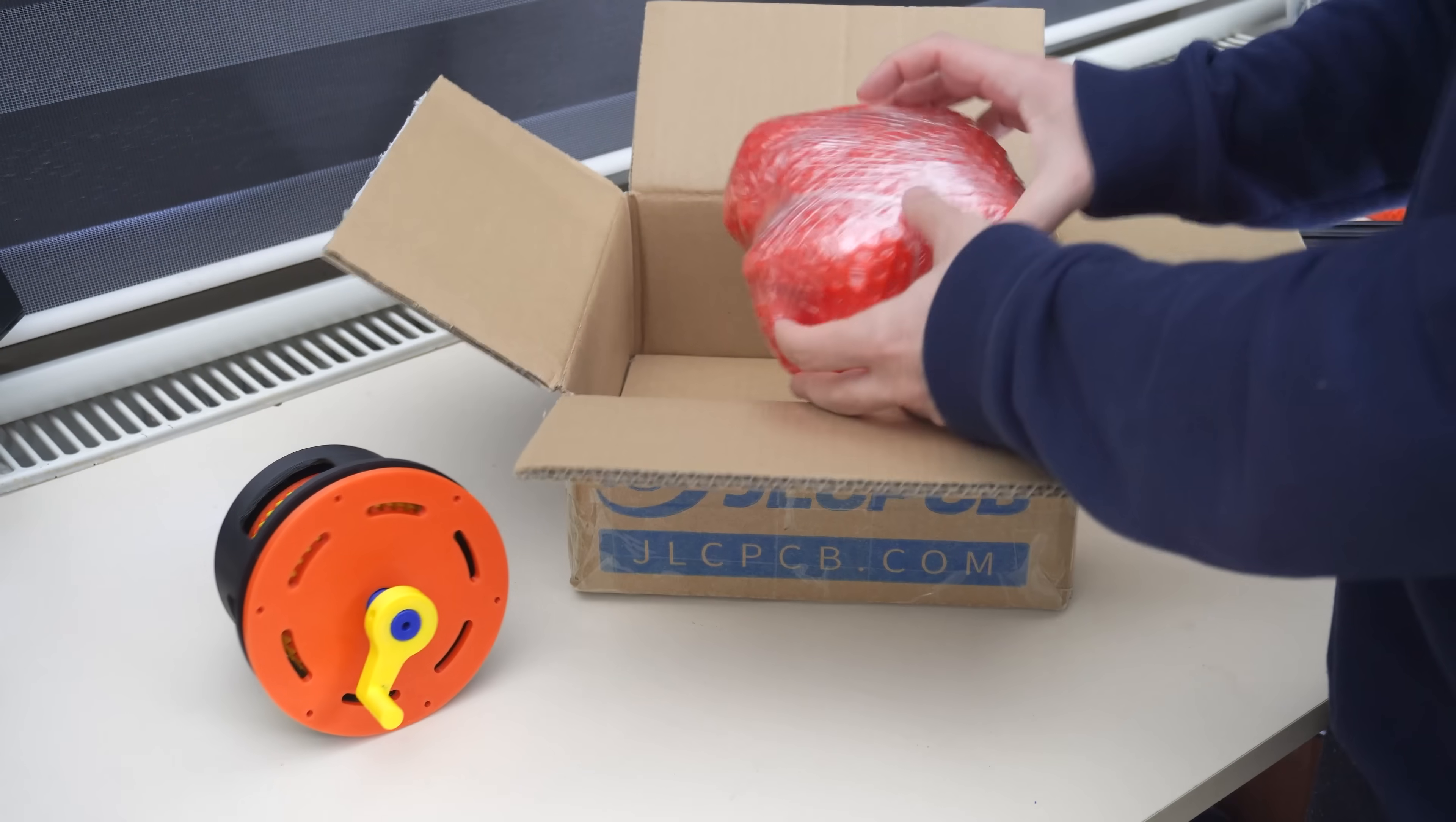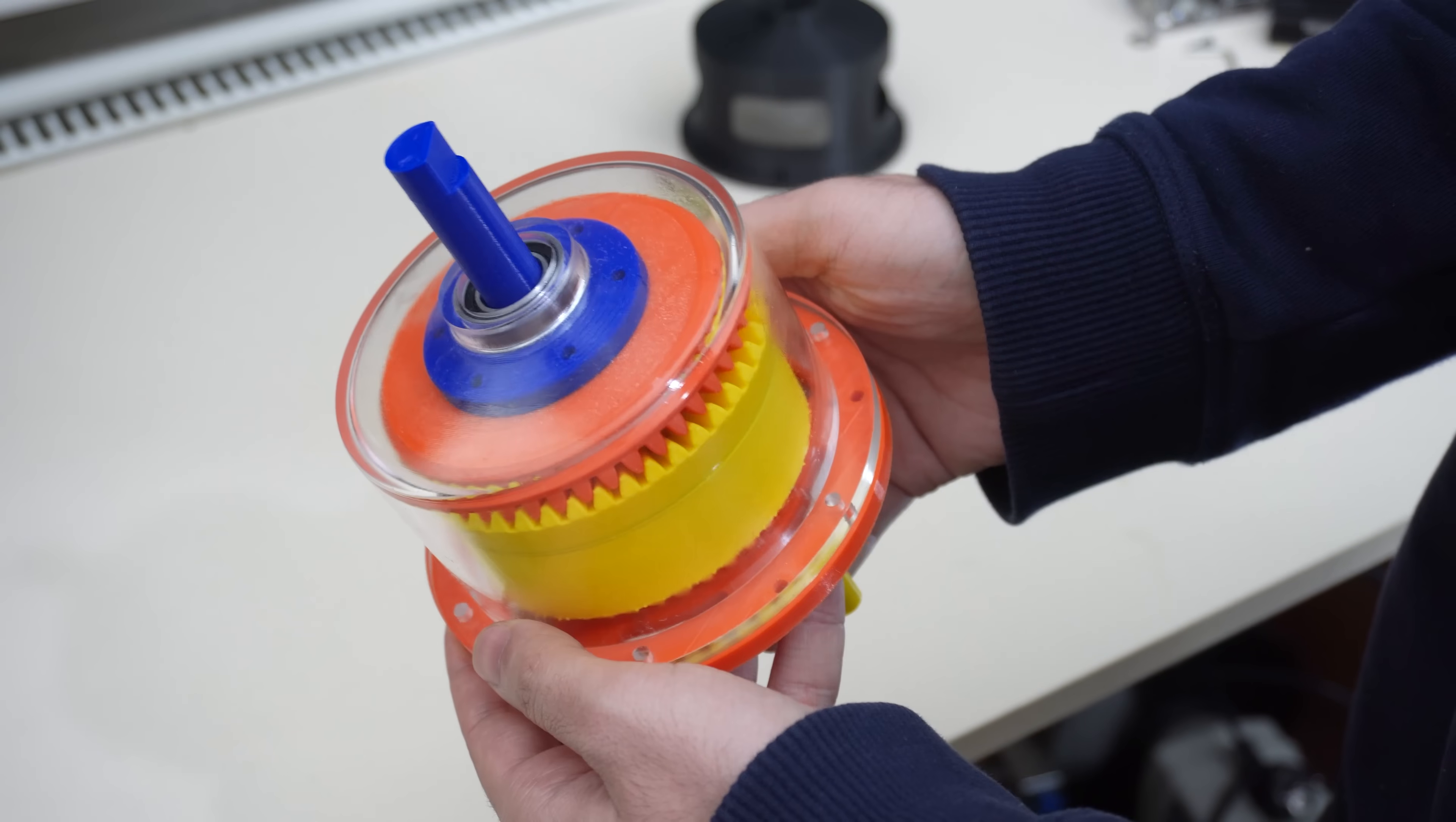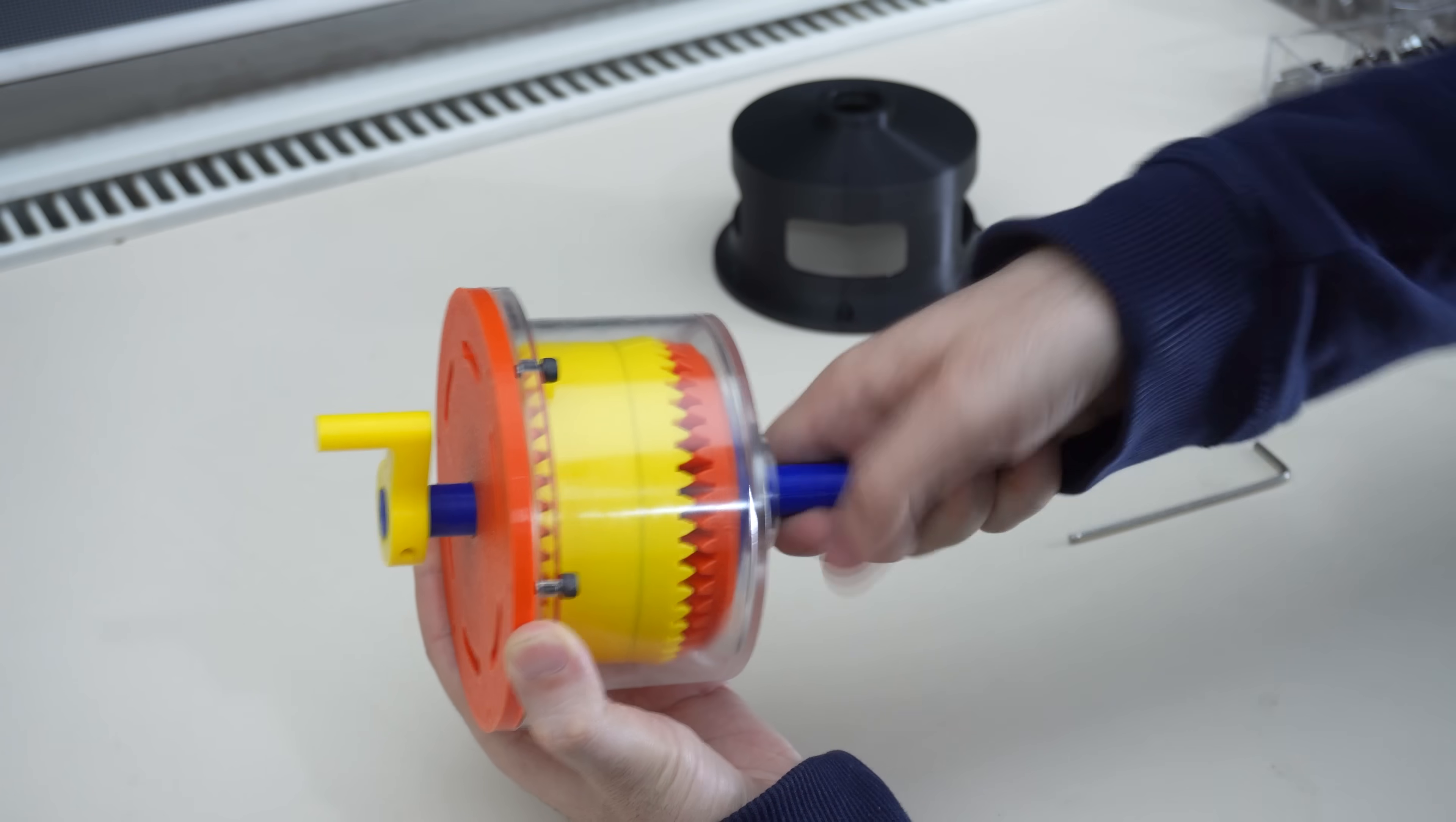By the way, I made another version of this and got a transparent cover made by JLCPCB, so I could see what's happening while it's working. This was produced using JLCPCB CNC services. It looks pretty good, honestly. And let's see if it's back drivable. I can turn it easily from here, but from here... no, I can't turn it. It's like stuck. It's not back drivable.